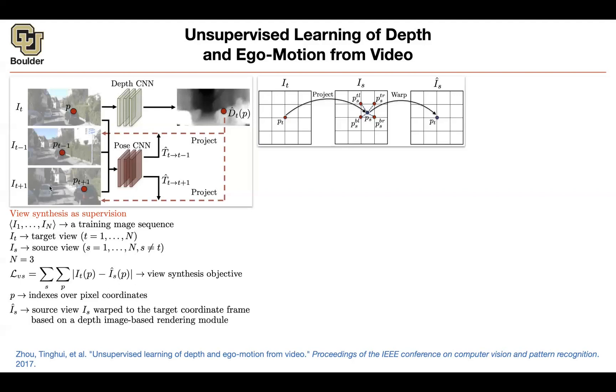Now, the only unknown term in this view synthesis objective is how are you going to warp your images. And as I mentioned, IS is your source image warped towards the target image. And you are going to do it according to some rendering module. And you want that rendering module to be differentiable because you want to do backpropagation and training.